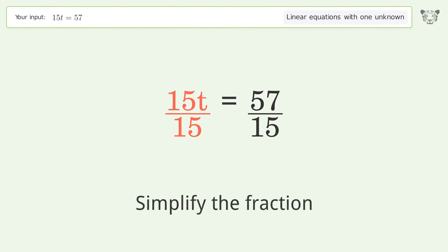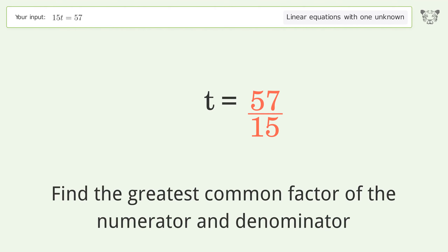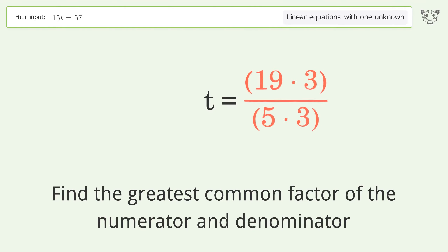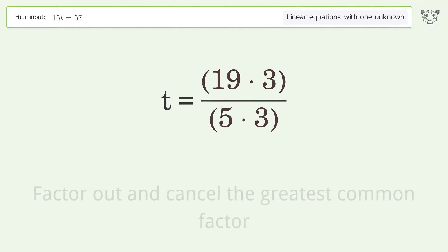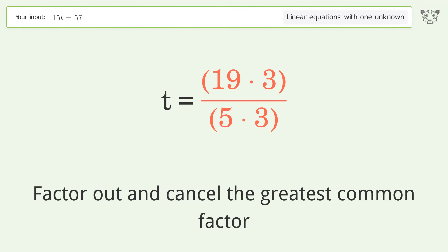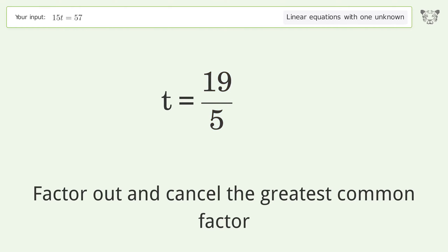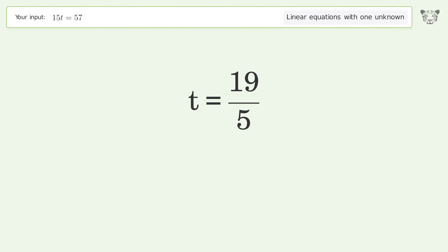Simplify the fraction. Find the greatest common factor of the numerator and denominator. Factor out and cancel the greatest common factor. And so the final result is t equals 19 over 5.